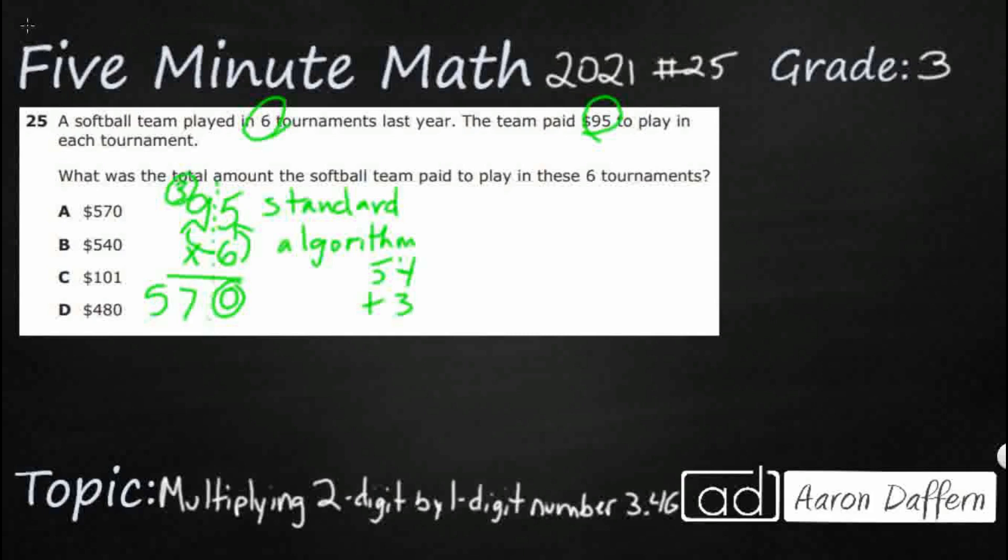Now if we use the distributive property, that's a cool way to do it. What we can do is we can break it apart. We're going to break apart our factor 95 into two parts. We're going to say 95 is really 90 plus 5. Let's take care of it in two chunks, 90 and 5. Think of it as expanded form. And the distributive property lets us know that you can multiply both of them by 6. Add up the two products to get your answer.